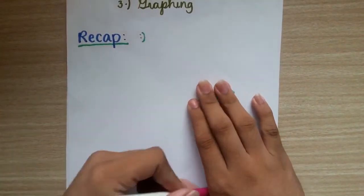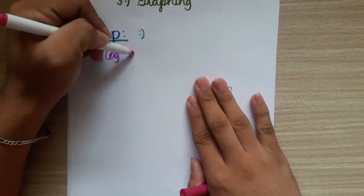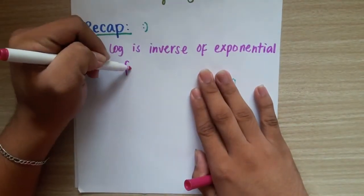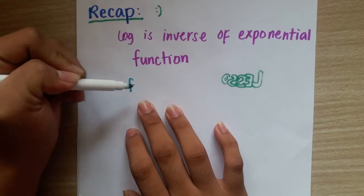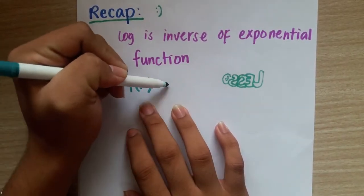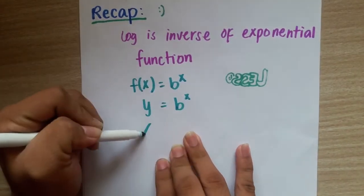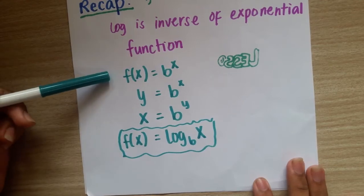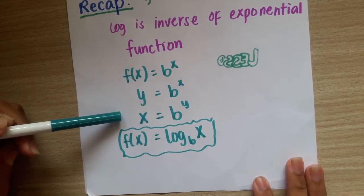Let's have a short recap on what we've learned last lesson. Logarithmic function is the inverse of exponential functions. So here's the process on how it is derived. f of x is changed into y and x is swapped by y forming the logarithm of x with the base of b.